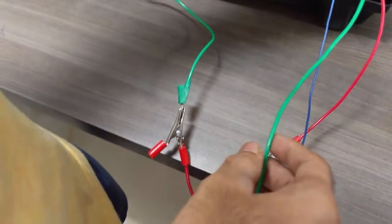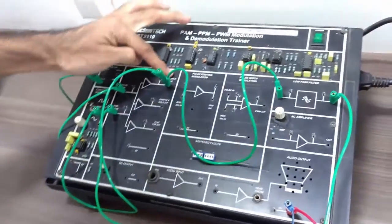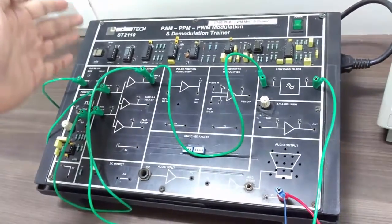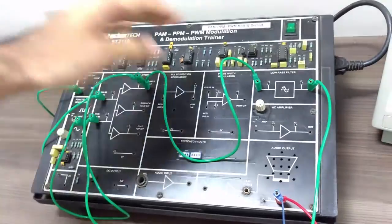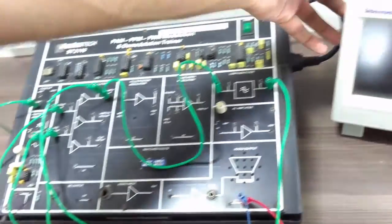We will connect channel 2 over here and channel 1 we will keep as the sample output so as to observe that the demodulated output from the sampled version is observed on the DSO. So now let us check the output.